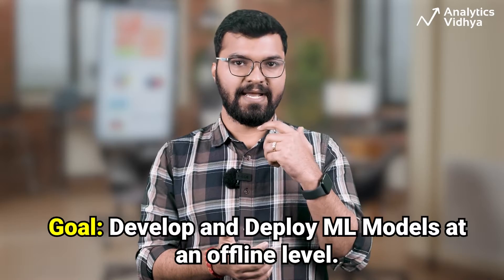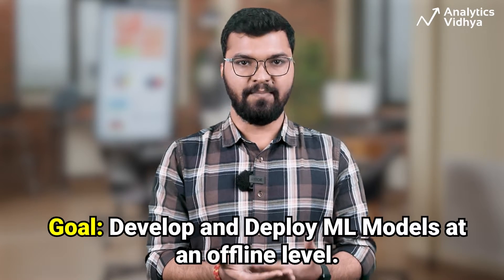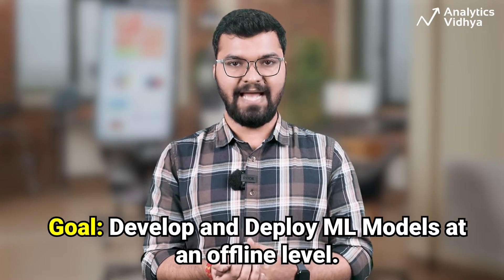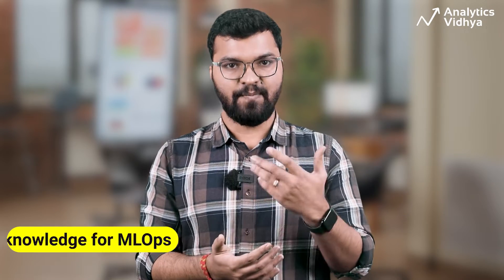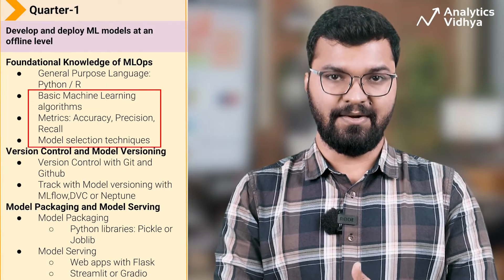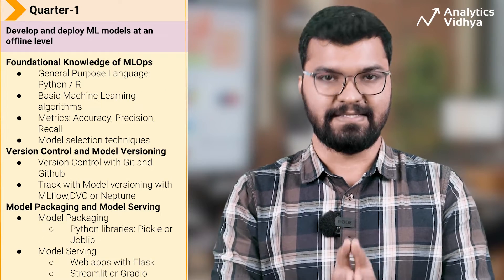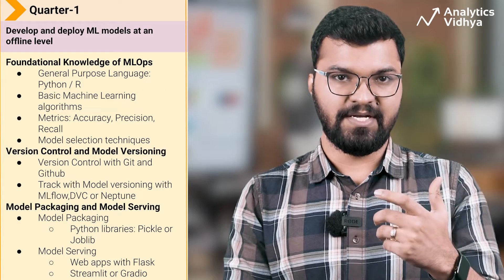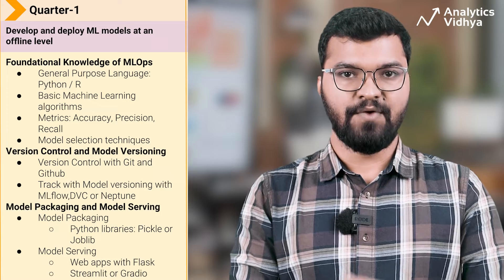The goal for Quarter 1 is to learn how to develop as well as deploy machine learning models at an offline level within your machine. Start off by learning essential machine learning skills — an understanding of basic machine learning algorithms, evaluation metrics, and model selection techniques is necessary. If you are a professional starting in this domain, revise these topics; for freshers, you must learn these skills within this quarter.